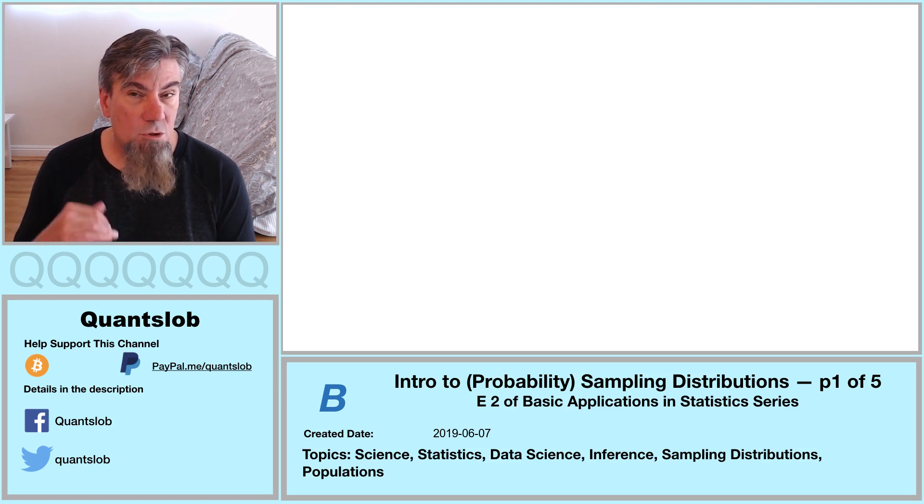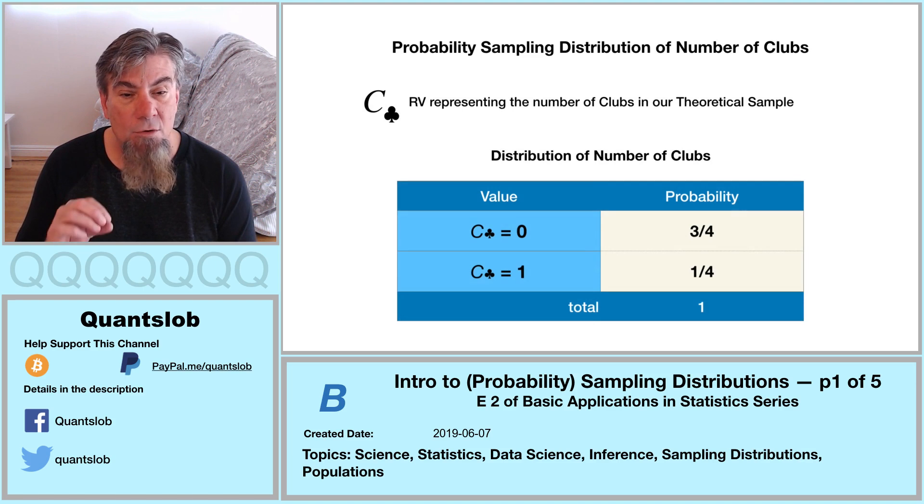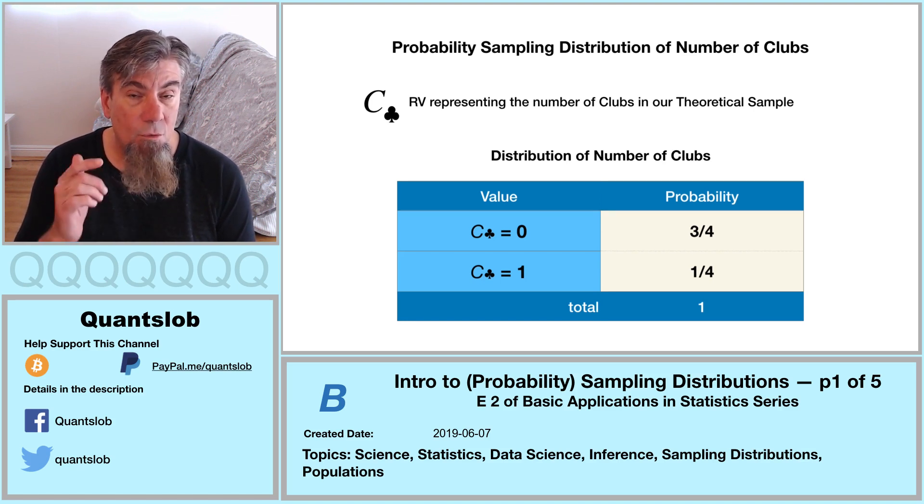We're going to transform or translate the sampling distribution into something of more direct practical value. We're going to create a sample statistic, namely the number of cards suited as clubs in this theoretical random sample of size one. RV here stands for random variable.